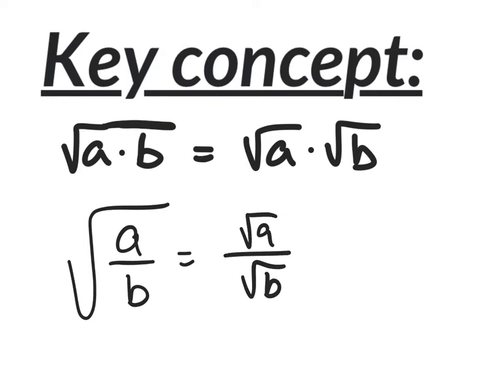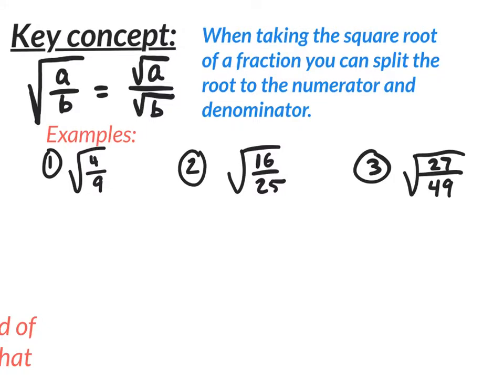Please jot that down. Right here we have our key concept: when taking the square root of a fraction, you can split the root to the numerator and to the denominator. Kind of like before, where you had a times b and could split it to the a and to the b — right here it's a divided by b, and you can split the root to the a and put the root on the b. It's pretty straightforward, especially if you have both perfect square numbers on the numerator and denominator.